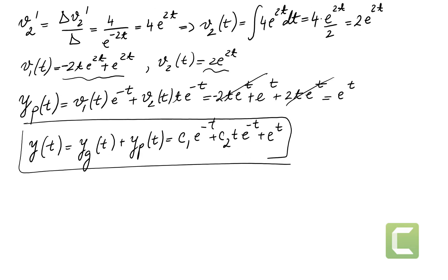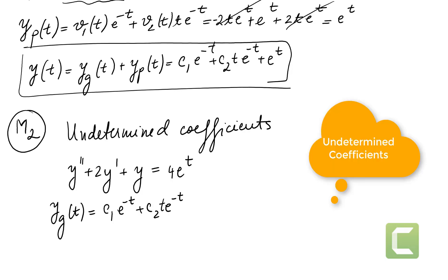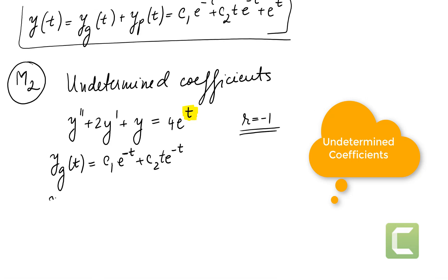Now let's look at the same problem using Method 2: undetermined coefficients. For y'' + 2y' + y = 4e^t, we already found from the auxiliary equation that r = -1. Since r = -1 has nothing in common with the exponent 1 (in e^t), we assume the particular solution has the form y_p = A·e^t.